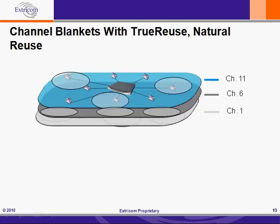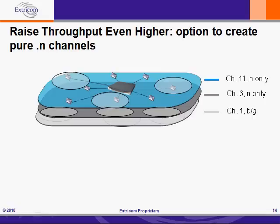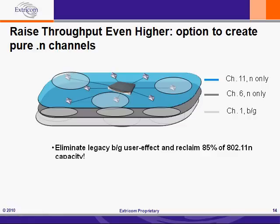The 5GHz band opens up the option of running up to four channel blankets in parallel. Another bandwidth multiplier is the fact that the channel blanket architecture gives us the option to segregate 802.11N users onto their own 40MHz channel blanket, or onto two 20MHz channel blankets, as shown here. Legacy users are restricted to channel 1, where they will still have all the bandwidth they need. This is of critical importance because removal of the legacy users from the end channels can provide an additional seven times more throughput as we reclaim the high-speed bandwidth that those slower users would have wasted. This kind of segregation within a single band is impossible to implement in a microcell architecture.